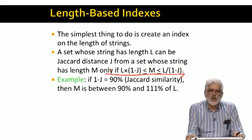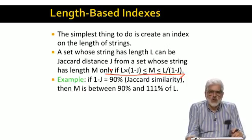But for example, if J is 0.1, that is the Jaccard similarity 1 minus J of the underlying sets is at least 90%, then M must be in the range 0.9L and 1.11L. Or put another way, M must be at least 90% of L and L must be at least 90% of M.